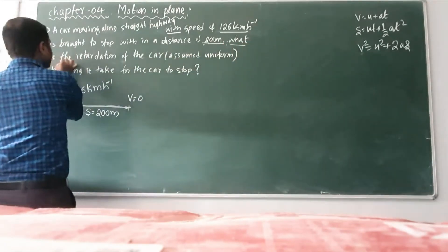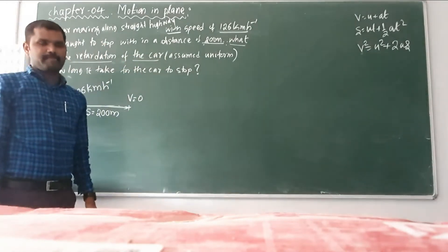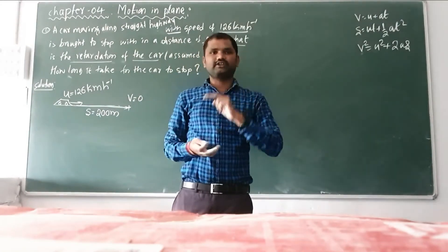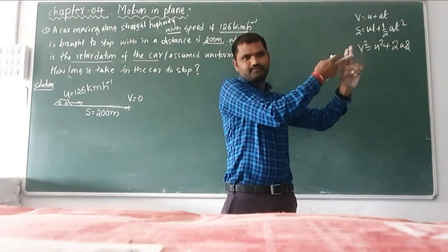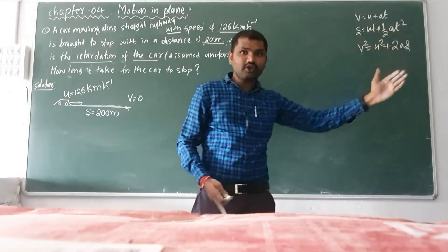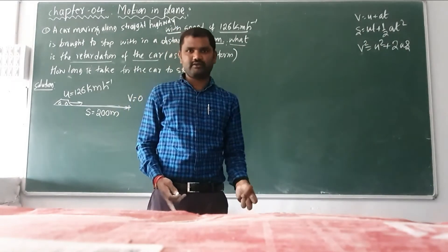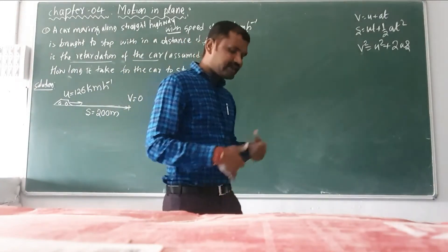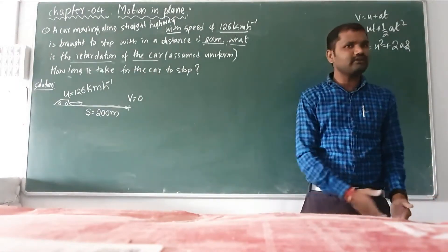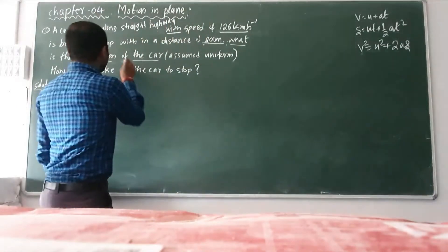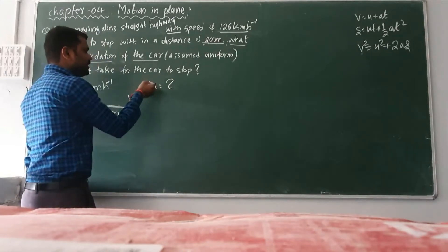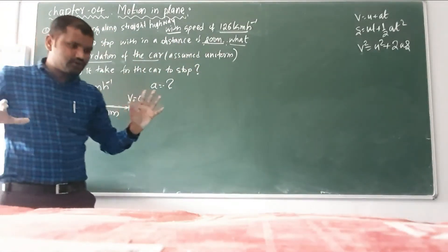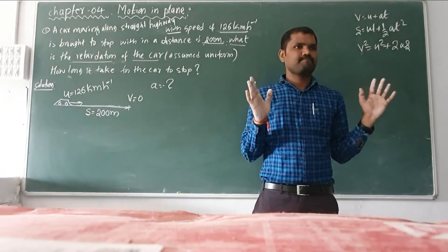What I need to find out? What is the retardation of the car? Retardation is nothing but acceleration. The rate of change of velocity is acceleration. If acceleration goes on decreasing, that is called retardation — meaning the velocity decreases: 120 km/h, then 100 km/h, then 70 km/h. If velocity goes on decreasing, acceleration is negative — that is called retardation. So the answer must be negative. Assume the deceleration is uniform.